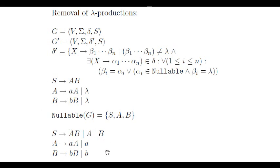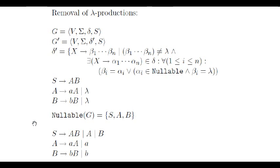In this case, the resulting grammar after the removal of lambda productions is this one. Note that for the right hand side AB, we can either not erase anything, erase B since it is nullable, or erase A since it is also nullable. We cannot erase both since it would force us to add a lambda production. For the right hand side lowercase a, uppercase A, we can either not erase anything, or erase uppercase A since it is nullable. For the right hand side lowercase b, uppercase B, we can either not erase anything, or erase uppercase B since it is nullable. Lambda productions are not added.